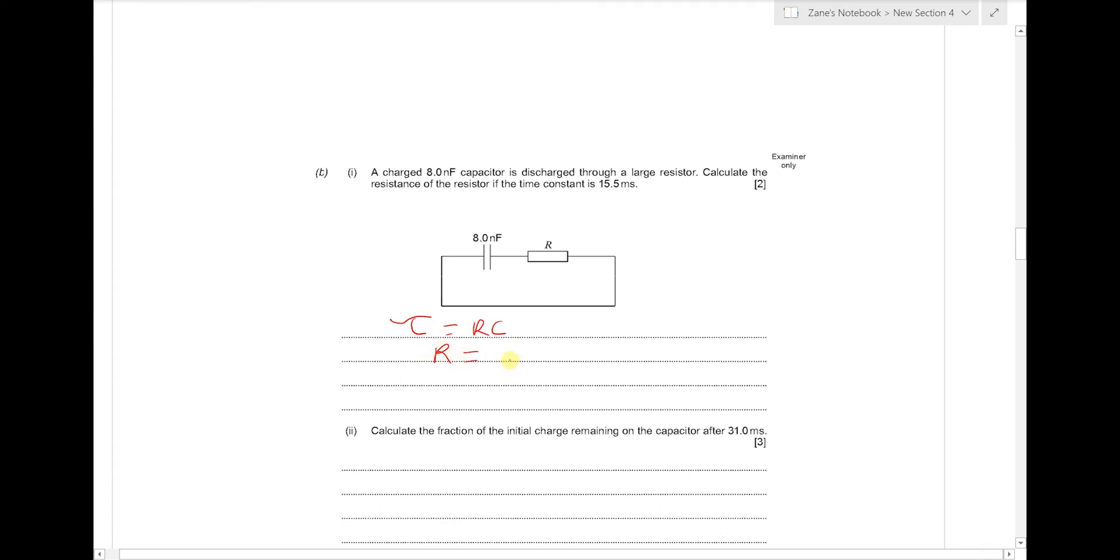So if we're trying to find the resistance, the resistance is the time constant over C. So we've got 15.5 ms divided by the capacitance of 8 nF. And substituting that into a calculator gives us an answer of 1.94 megaohms.